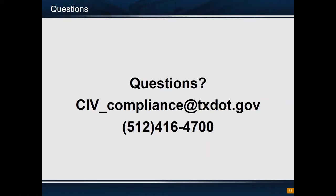The second question is: How is a DBE goal determined? Our goal section in the Civil Rights Division looks at every federally funded project to determine if there are subcontracting opportunities. They look at all the items of work on that project, they determine if there are available certified DBEs in that geographic area that are able to perform that type of work, and they will then make a determination whether that project is going to be assigned a goal. They look at the scope of work, the subcontracting opportunities, and the available certified DBEs in that geographic area — that's part of their goal-setting methodology.